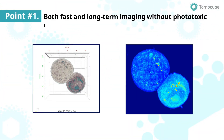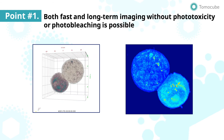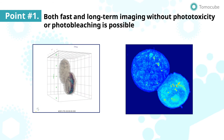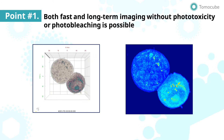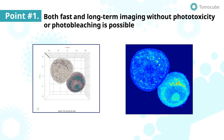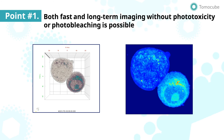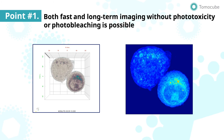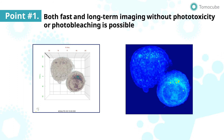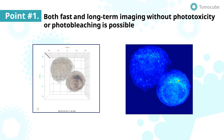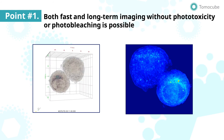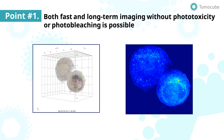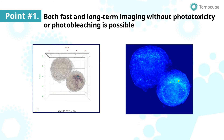Immunological synapse formation between cancer cell and natural killer cell has been observed using HT Timelapse. Using low-energy laser with fast acquisition speed, 3D holotomograms can be captured every 0.4 seconds. Therefore, it is possible to visualize the dynamically changing synapse in 3D in the cell-to-cell interaction.